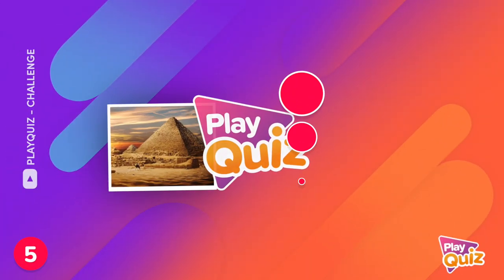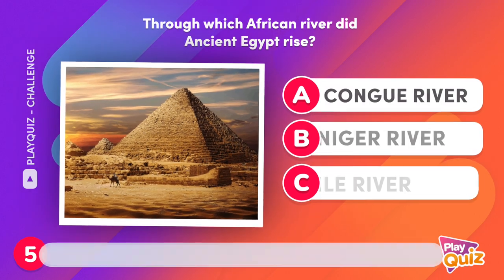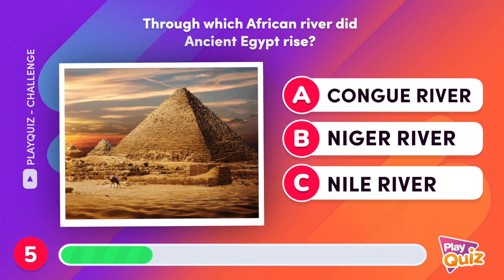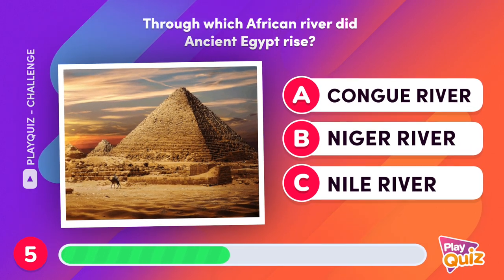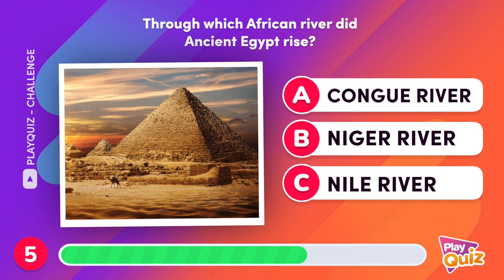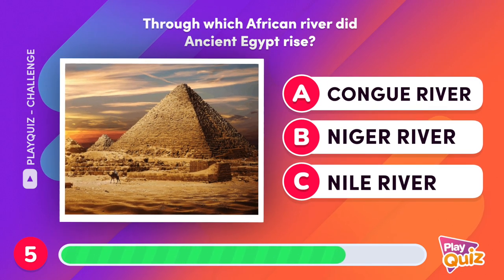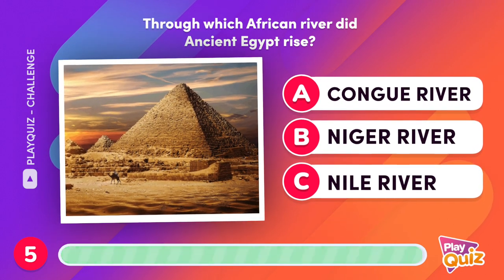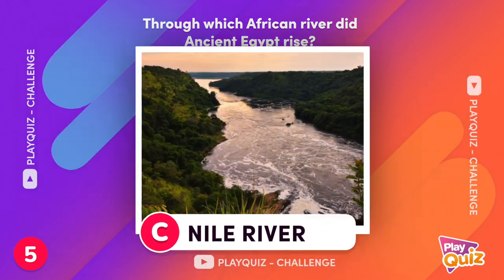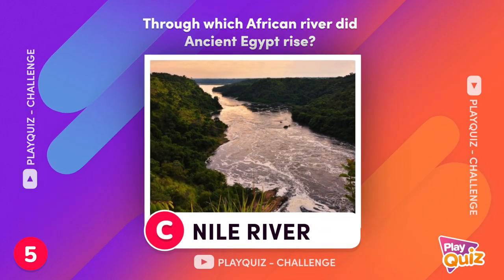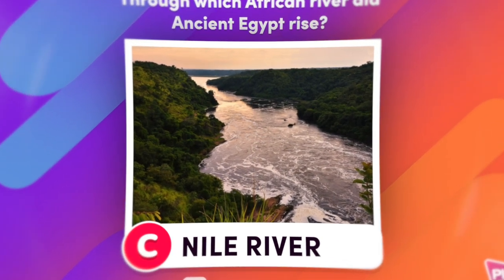Through which African river did ancient Egypt rise? The Nile River gave rise to the ancient Egyptian civilization.